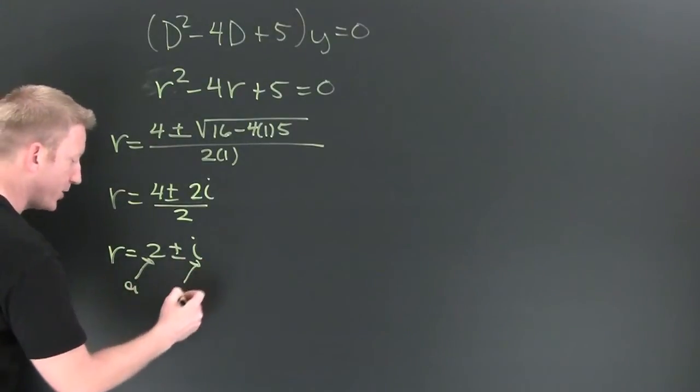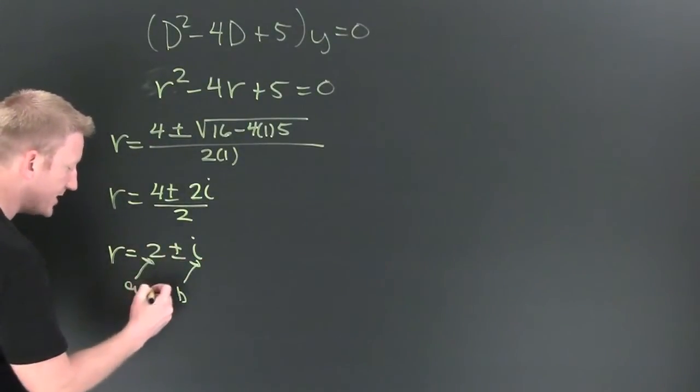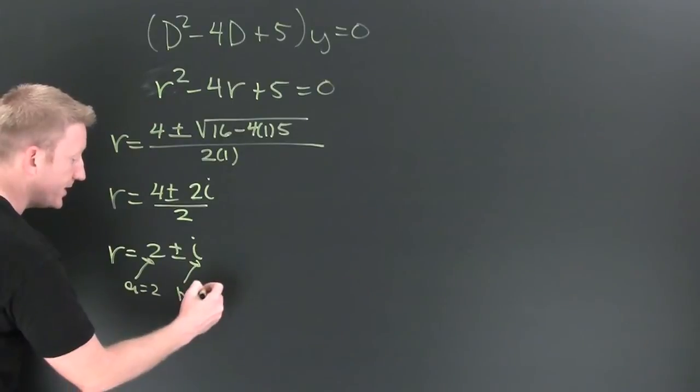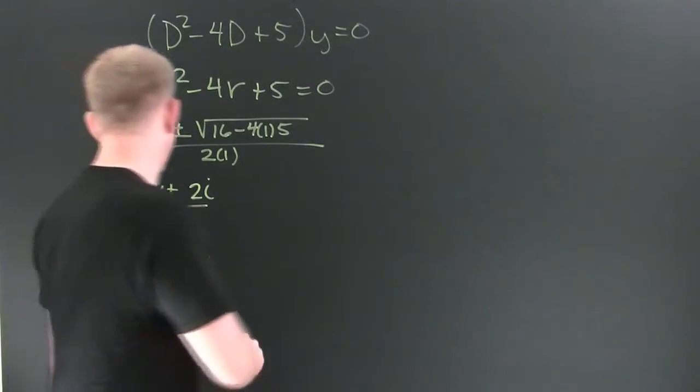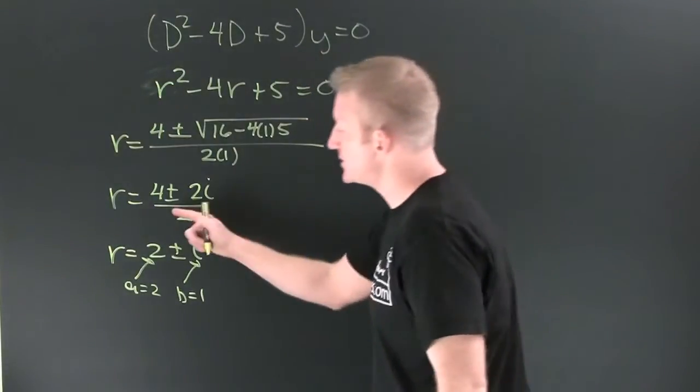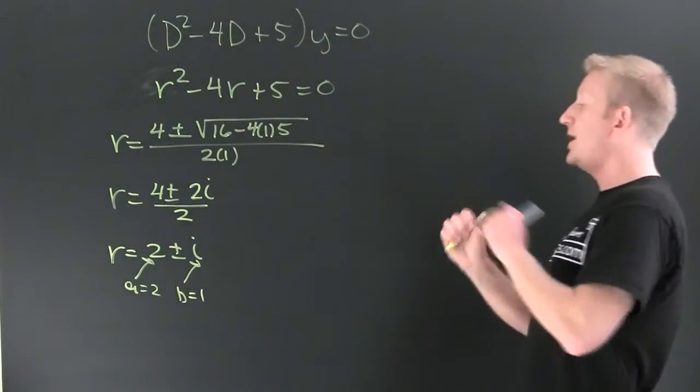Where this is the real part a and this is the imaginary part b. So here we see our a is going to be 2 and our b is going to be the number in front of the imaginary part, which is 1. So we see two solutions, the plus case and the minus case, both happening by using the sine and the cosine.